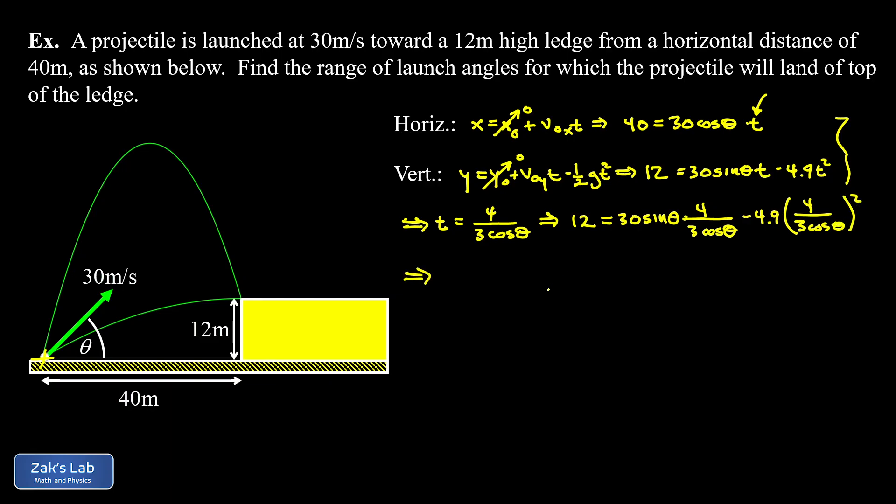We can clean things up a little bit and then try to get a grip on how to solve this thing. I noticed, for example, sin/cos, I could call that tangent and we'll clean up the numbers. We can cancel a three here, giving me a 10, and times four, that gives me 40.